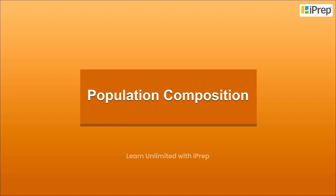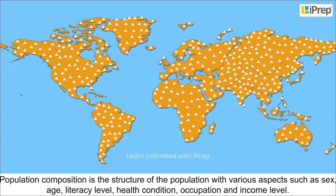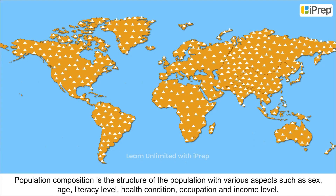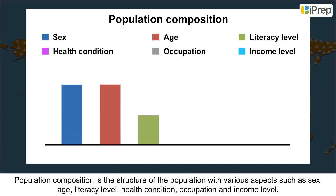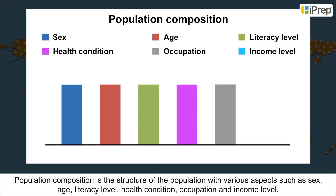Population Composition is the structure of the population with various aspects such as sex, age, literacy level, health condition, occupation and income level.